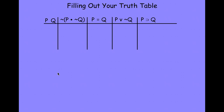Once we know the number of rows, we start with the innermost letter and alternate true-false, true-false until we get to the number of rows we need, whether it's 4 or 8 or 16. Then we go to the next letter and double the number of trues and falses in the pattern, following the pattern until we get to the number of rows needed. We do this for each letter moving outward. That mechanical process leads us to the combination of truth values in our guide columns. Once we've spelled out all the possible combinations, we copy those truth values under every instance of the individual simple statement letters on our Truth Table — copying values for P and then for Q from our guide columns.